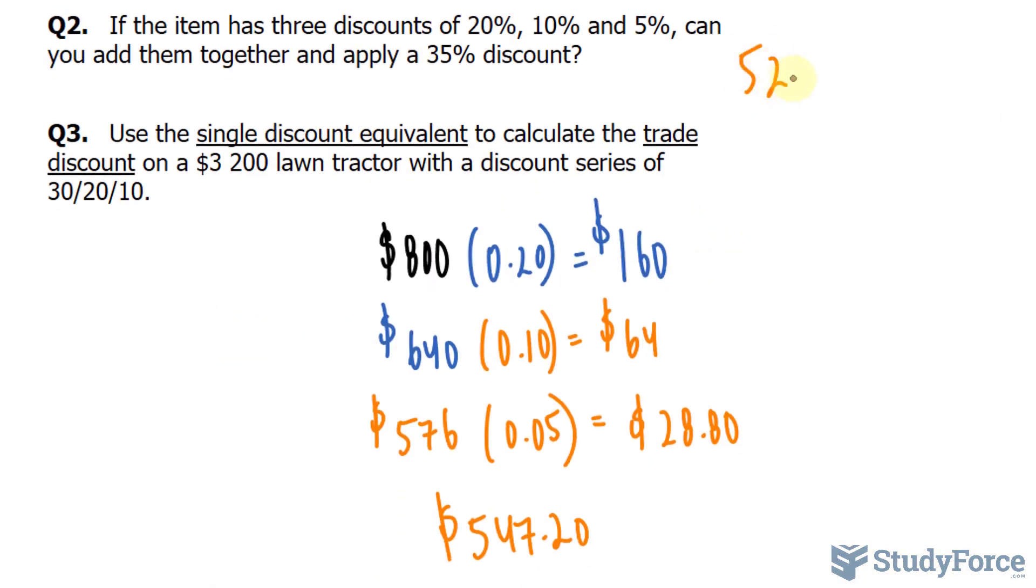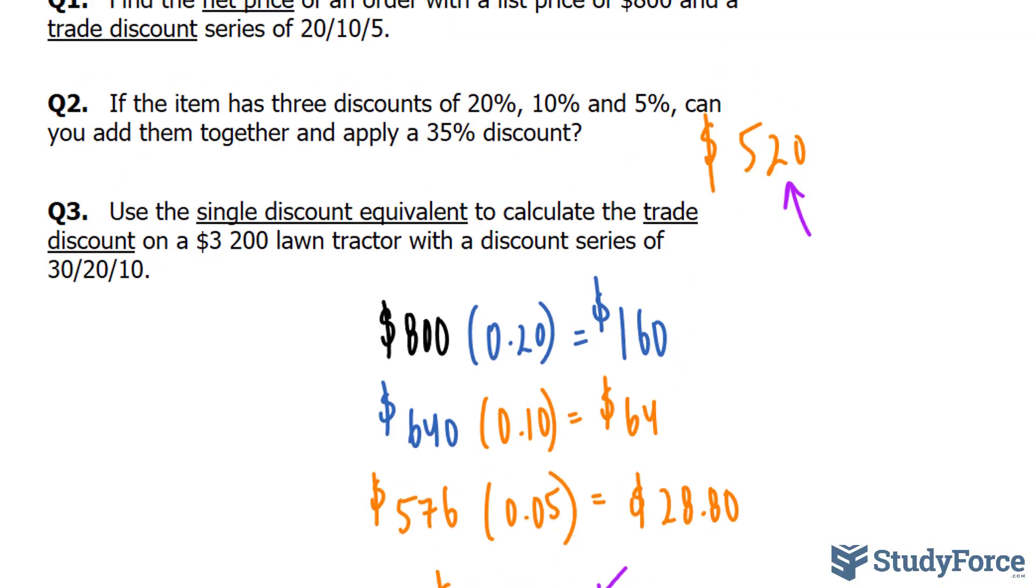So that tells us that you can't simply add up the trade discounts to find the total discount because as you can see, there's a discrepancy.